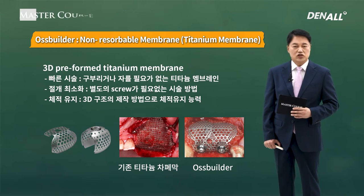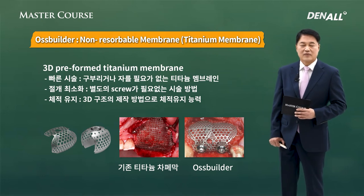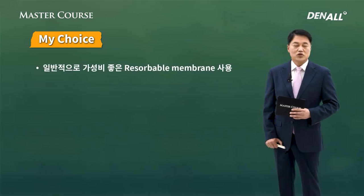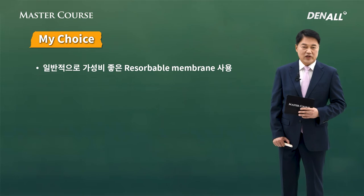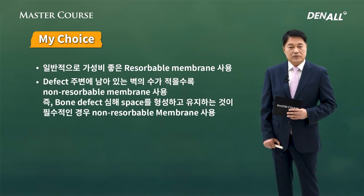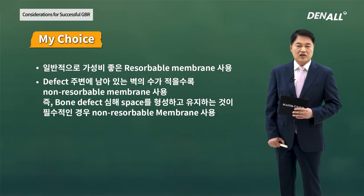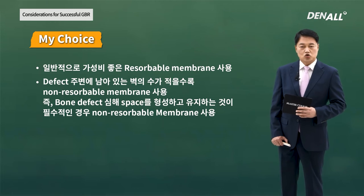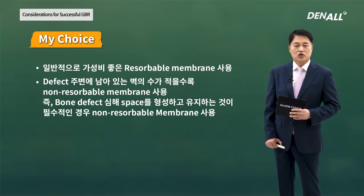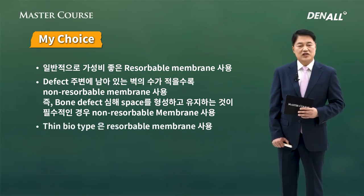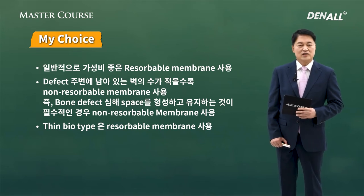Osbuilder has a 3D structure and excellent space maintaining capability. The membrane that I use — I normally use a resorbable membrane with good ROI. However, if the number of walls around the defect is very few, and if there is very severe bone defect requiring space creation and maintenance, I use non-resorbable membrane. For thin biotype, I use a resorbable membrane because it has good biocompatibility and helps in preventing wound dehiscence.